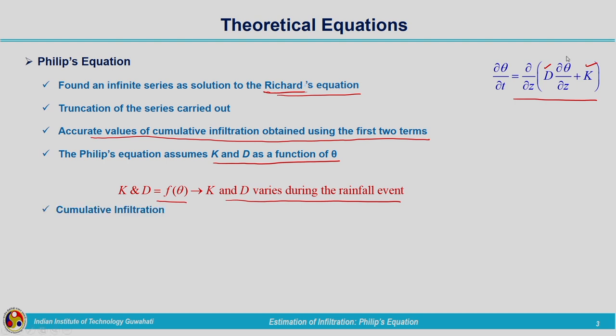The expression for cumulative infiltration consists of two terms. The truncation of the series is done for giving the accurate solution, and the accurate solution for cumulative infiltration was found with the initial two terms. F of t is given by S times t to the power of half, plus K times t. Two terms are present in Phillips equation representing the cumulative infiltration and also infiltration rate.